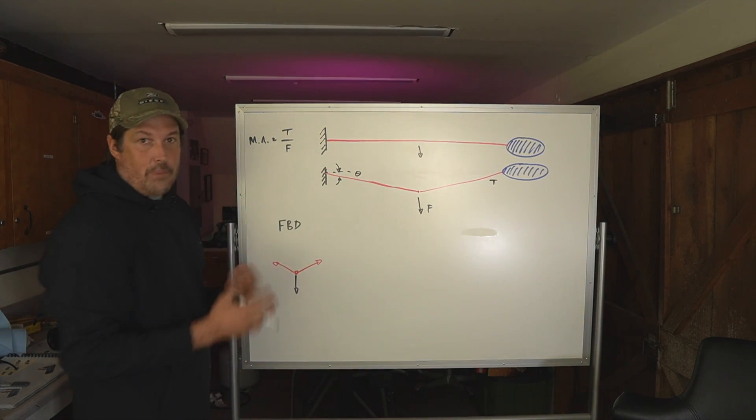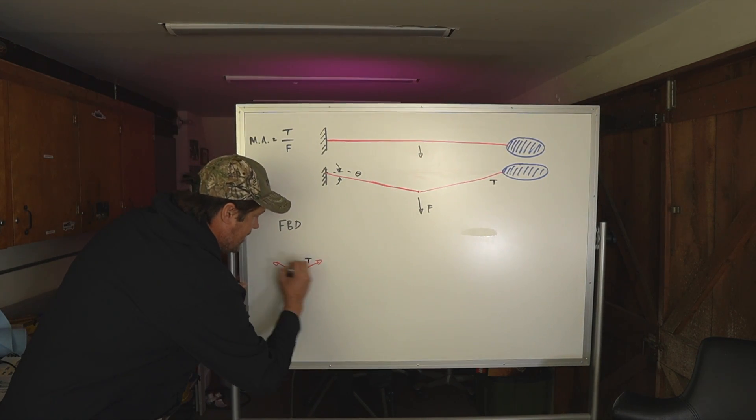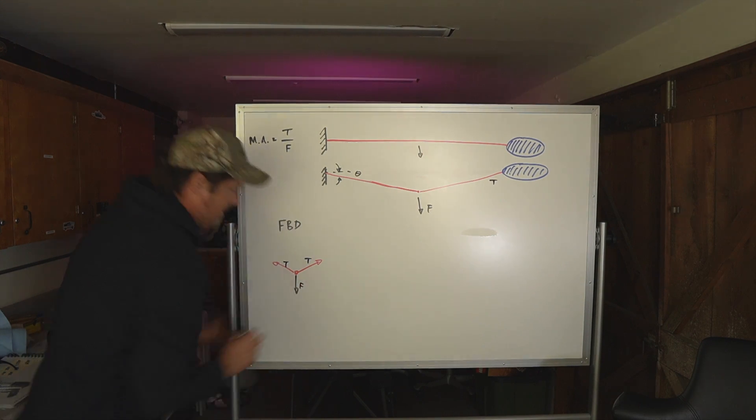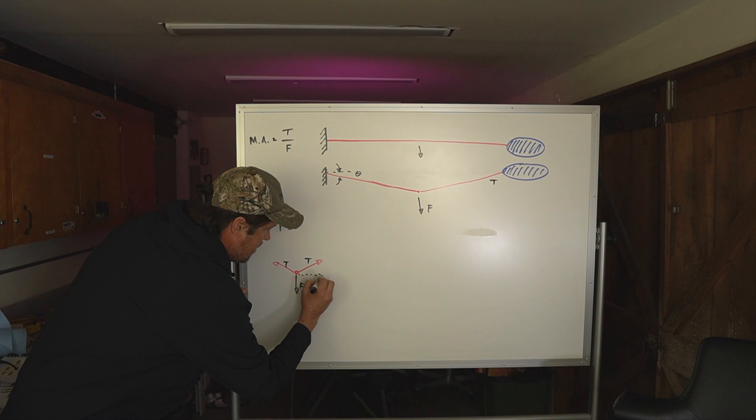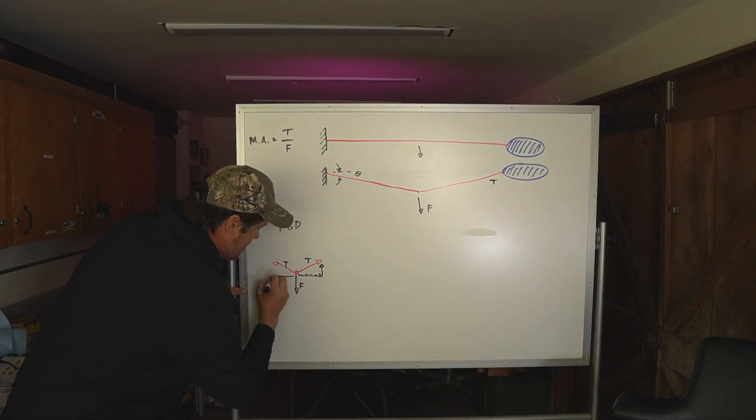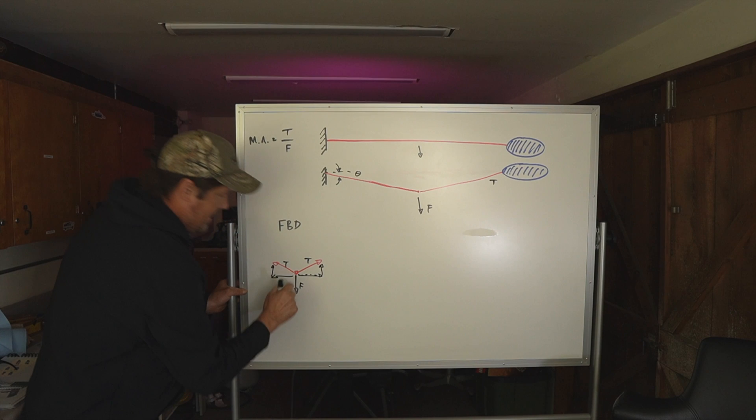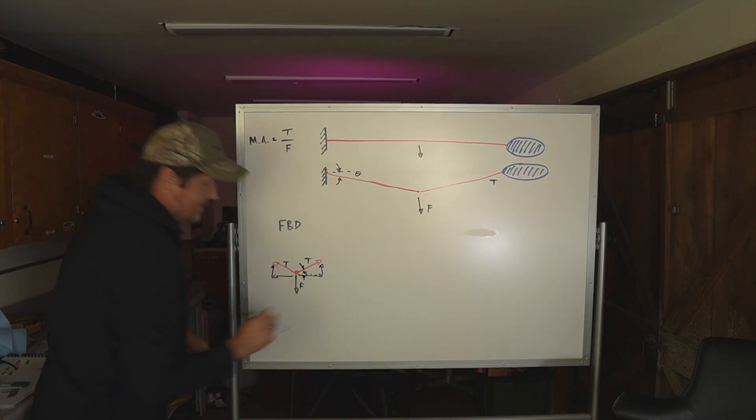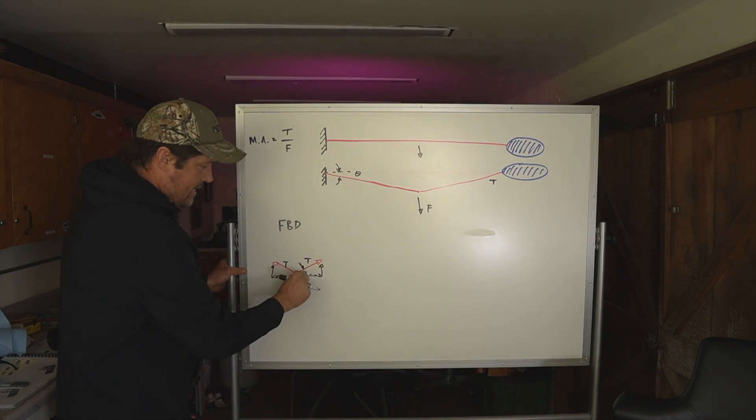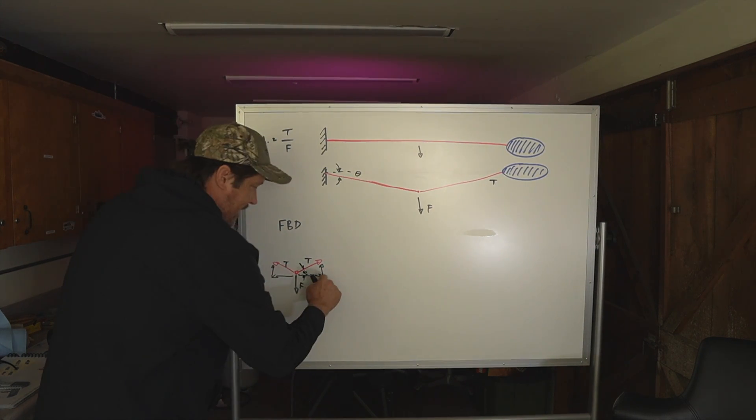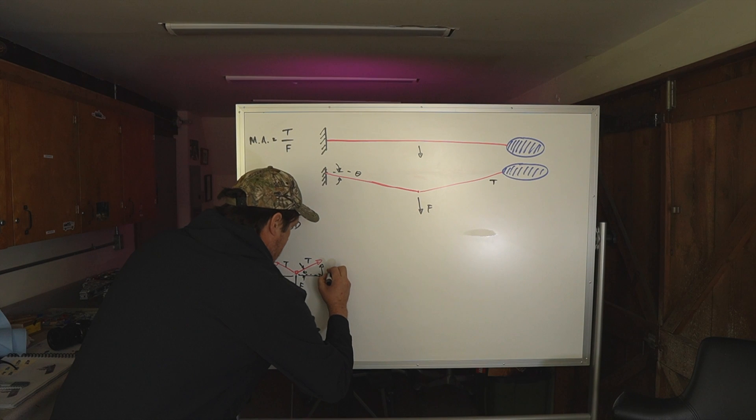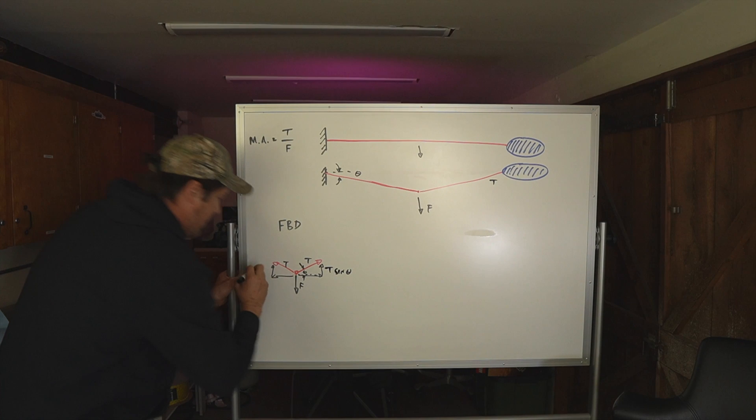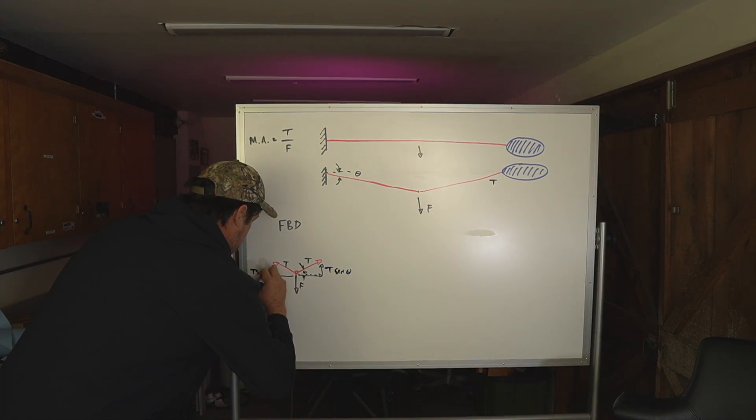We're going to do a free body diagram at this point. This is tension, this is tension, and this is the force down. And we're going to break the vectors into their X and Y components. And this will be the angle theta in here based on just some math. Whatever this angle was here is also that angle here, making this part T sine theta and making this vertical part T sine theta.